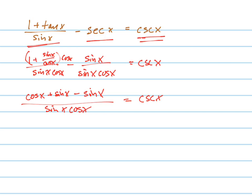Follow? I can see what's going to happen. Can you see it? Those sines are going to cancel and I'm going to get what? Cosine x over sine x cosine x equals cosecant x.